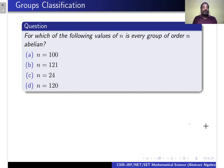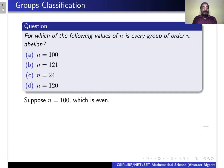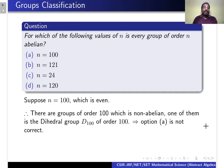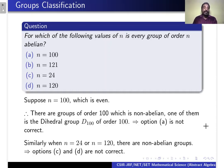The next question is: for which of the following values of N is every group of order N abelian? The options are N = 100, 121, 24, and 120. Since N = 100 is even, there are non-abelian groups of order 100 — one of them is the dihedral group D100. Therefore, option A is not correct. Similarly, when N = 24 or N = 120, there are non-abelian groups. Therefore, options C and D are also not correct.